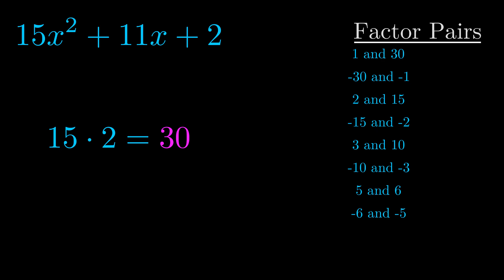The b value is the coefficient on the x term. That's the middle term, the one that we haven't done anything with yet. And really this is the only factor pair that we need.